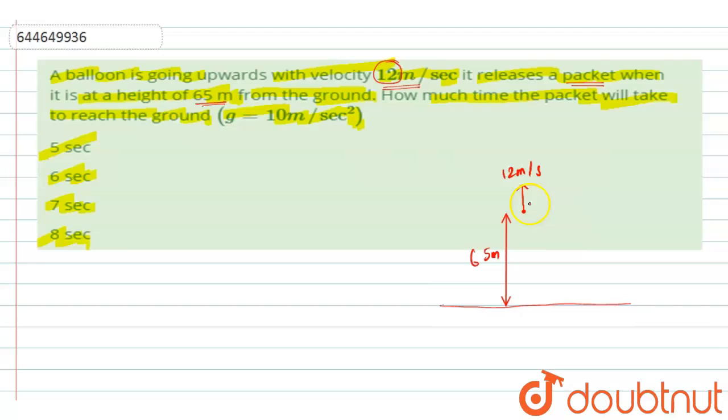And when it is released, it will move some distance in the air and then it will fall on the ground. So if I say this time to be t equals to 0, and this time it has taken time t equals to some seconds to reach the ground.